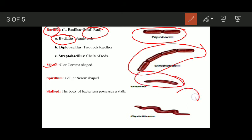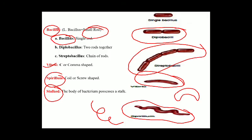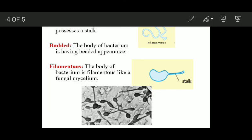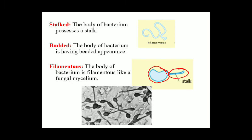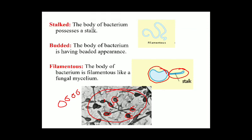Then we have spirillum — these bacteria are coiled and assume the shape of a coil or spiral, as you can see here. Then we have stalked bacteria — the body of the bacterium possesses a small stalk, as shown in the image. In budded bacteria, the body of the bacterium has a bead-like appearance — you can see a number of bead-like structures in the image.